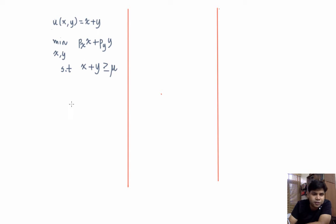When we are going to plot the constraint this is how it's going to look. So this is our constraint. We want to pick a point in this region that minimizes px times x plus py times y, that's our expenditure.